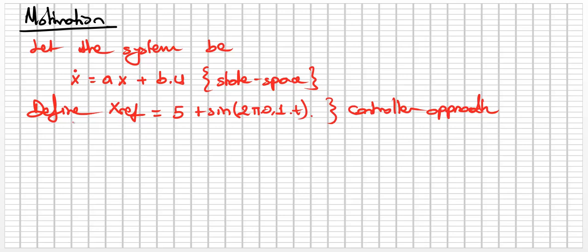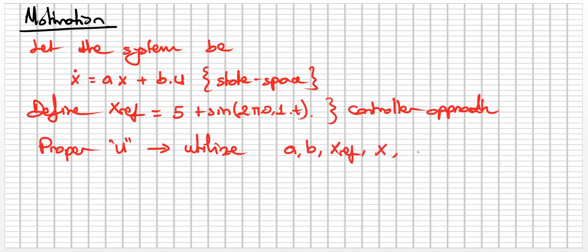In order to drive the system to a specific point, we should select the specific u value. How can we obtain this controller rule to get the proper u value? We should utilize A, B, x_ref, x, and x_ref_dot in the system. This is a simple system with no disturbance effect or nonlinear part, so these parameters should be enough to derive the proper control input u.